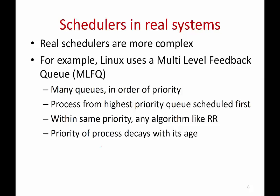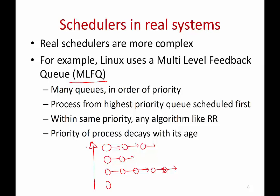For example, Linux uses what is called a Multi-Level Feedback Queue, or MLFQ. You have multiple queues of processes with different priority levels — queues at the top have the highest priority, queues at the bottom have the lowest. You always pick processes from the highest priority queue; if there are no processes there, you go to the next queue. Within the same priority level, you can run an algorithm like round robin to go over all processes of that priority.